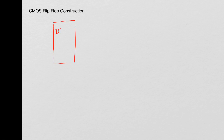A flip-flop will have a D input and a Q output. Instead of enable, which was there for the latch, it has a clock input.